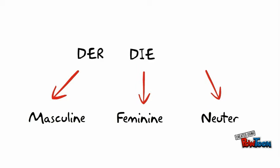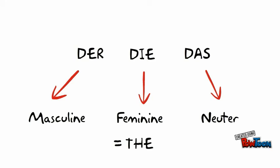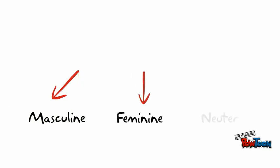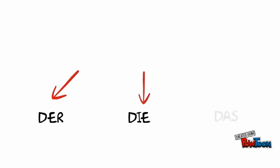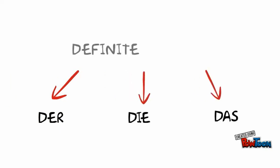These definite articles correspond with the English word 'the.' There is a second category of articles called indefinite articles. These are Ein, Eine, and Ein, which in English can be translated as 'a' or 'an.' So there are two kinds of articles in German: Der, Die, Das — these are called definite articles.